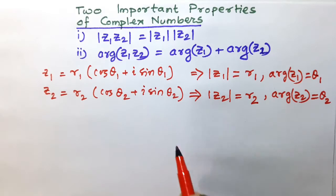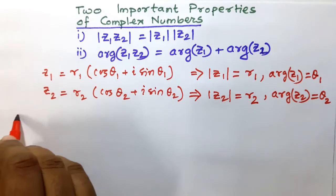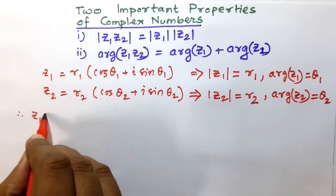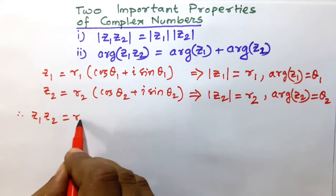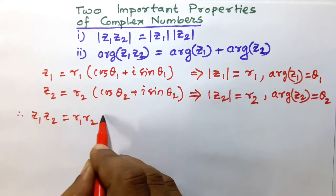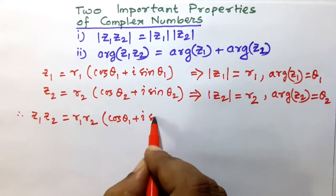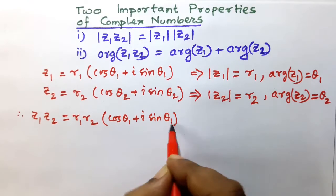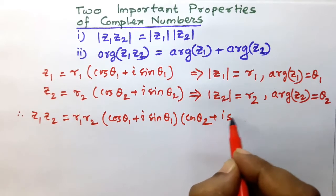Now we shall multiply these two complex numbers Z1 and Z2 such that Z1 times Z2 equals R1 into R2 into cos θ1 plus i sin θ1 into cos θ2 plus i sin θ2.